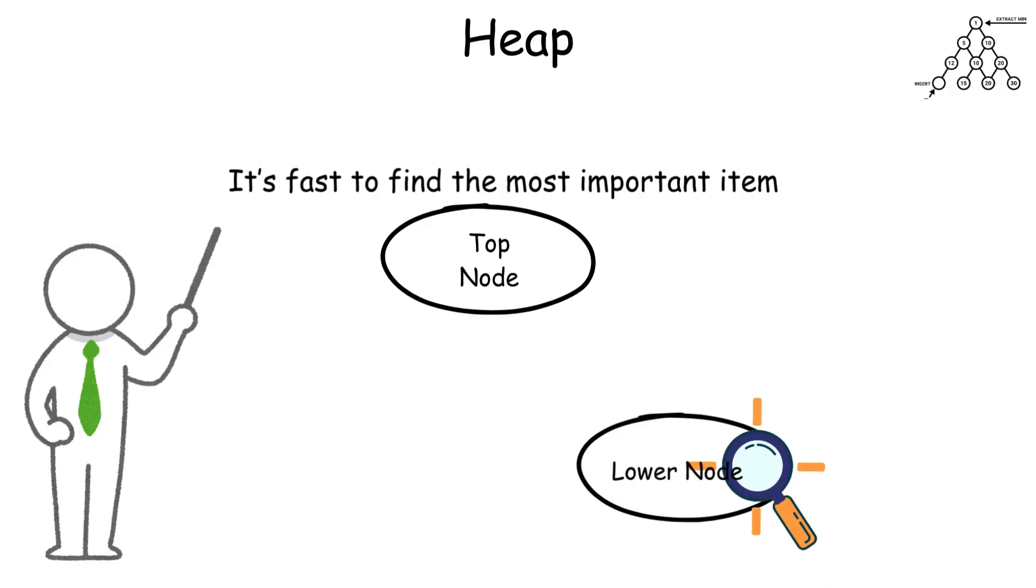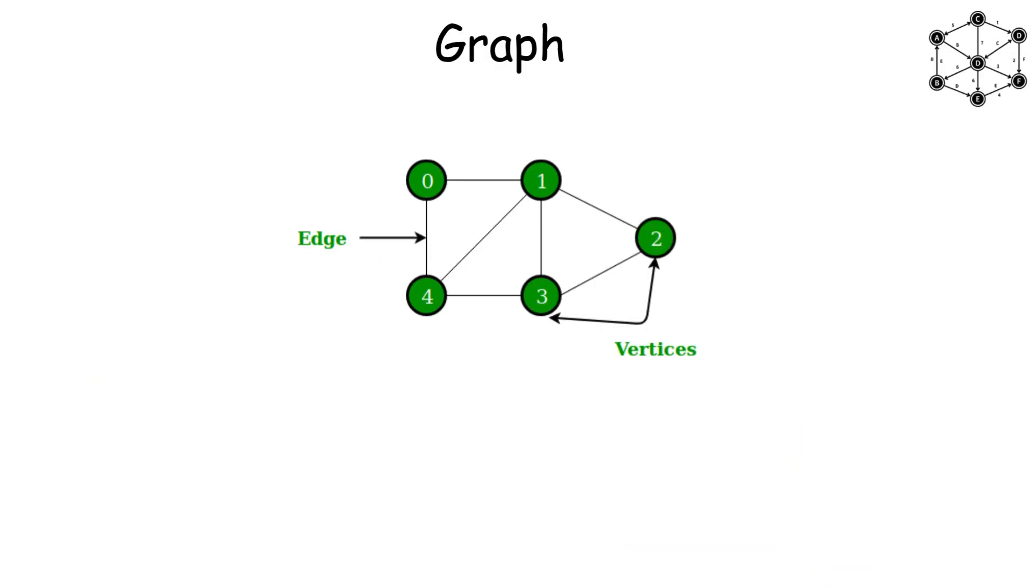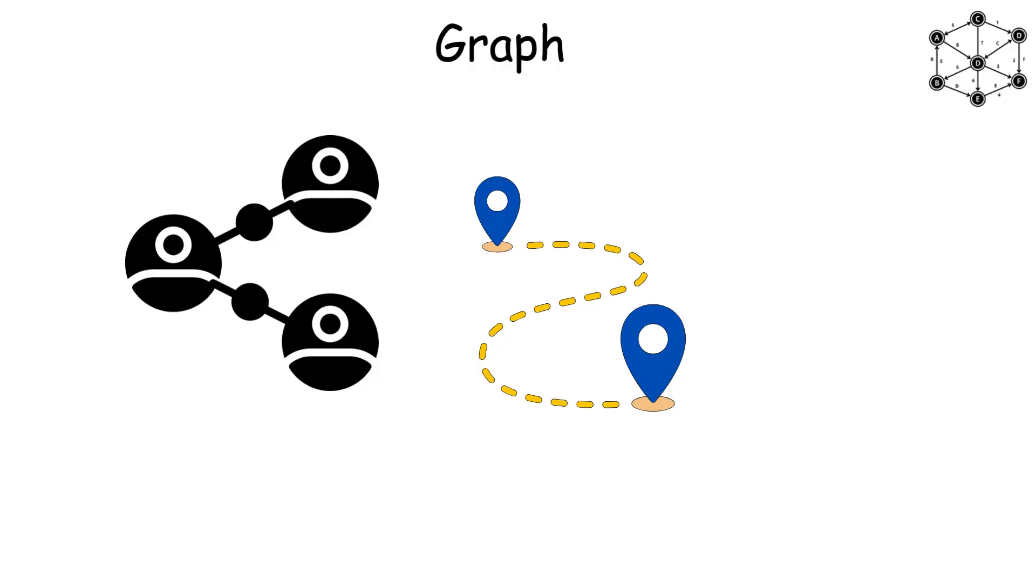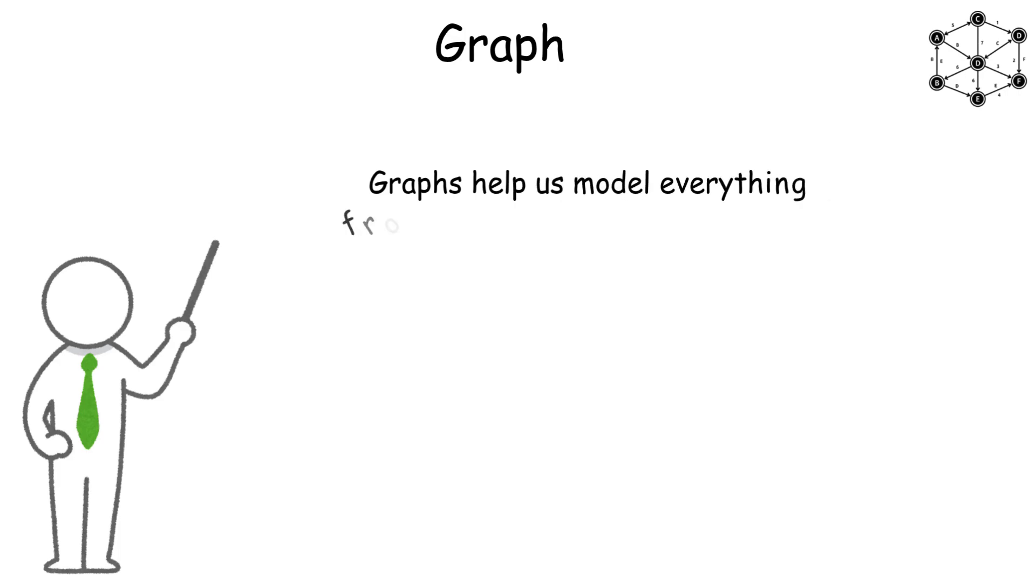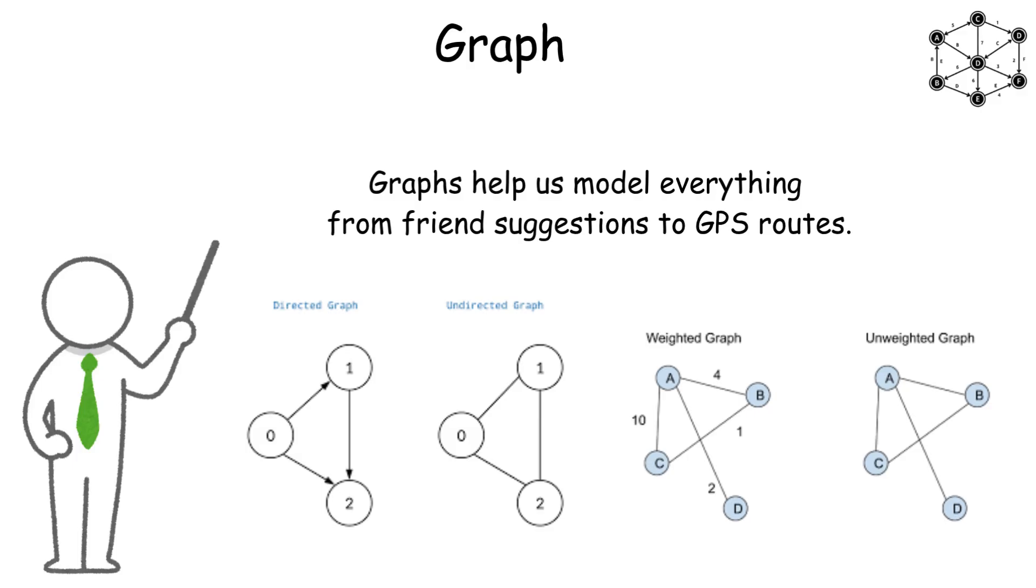Graphs: Finally, graphs. Graphs are about relationships. They connect nodes with edges. Think of social networks, maps, or web links. Each node is an entity, and edges show connections. Graphs help us model everything from friend suggestions to GPS routes. They can be directed or undirected, weighted or unweighted, depending on how connections behave.